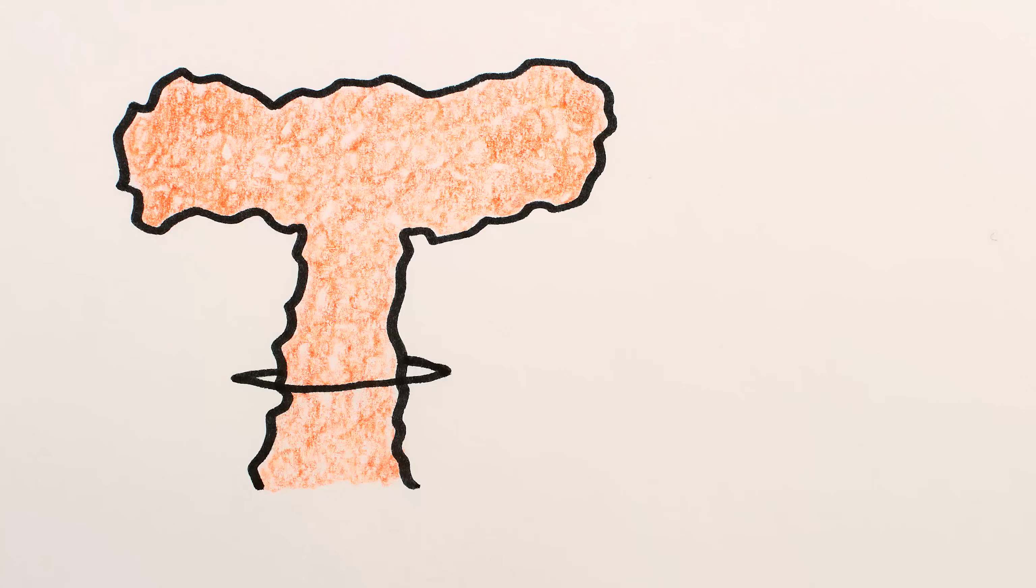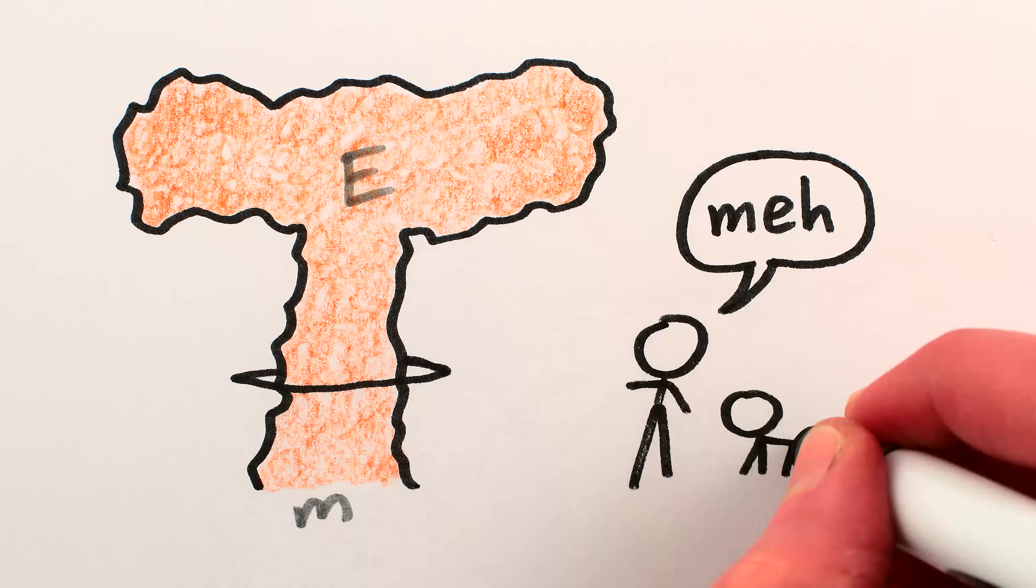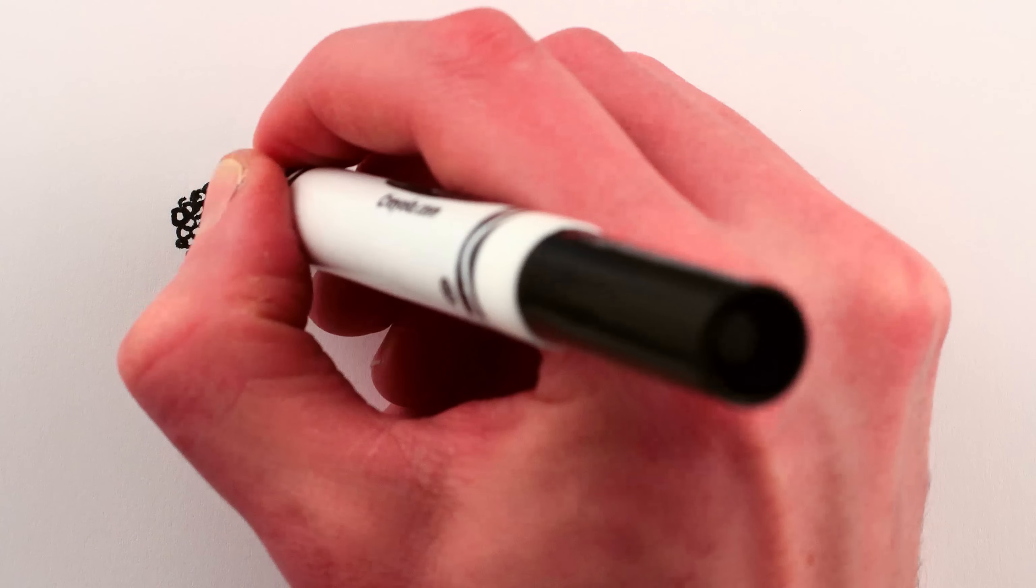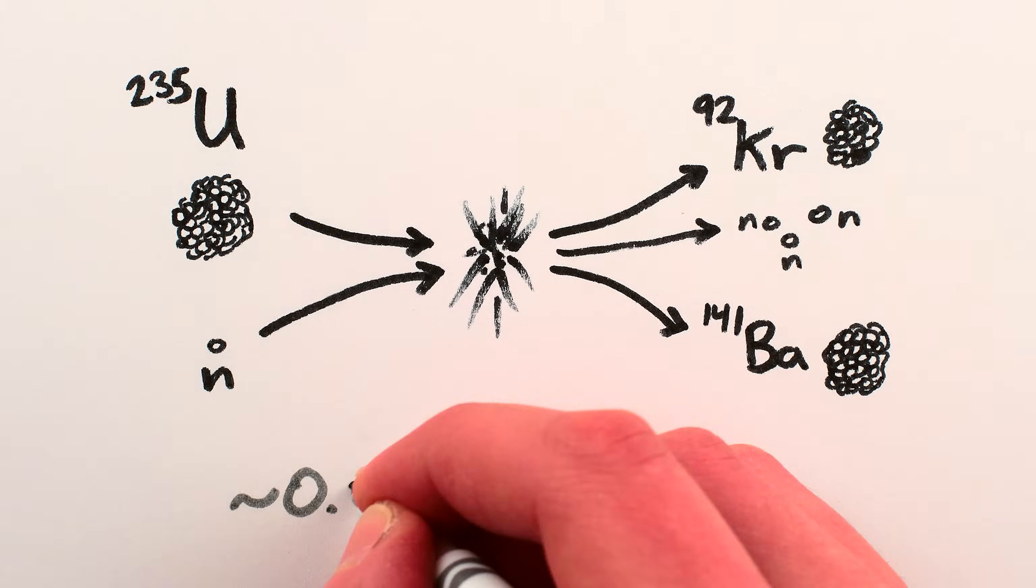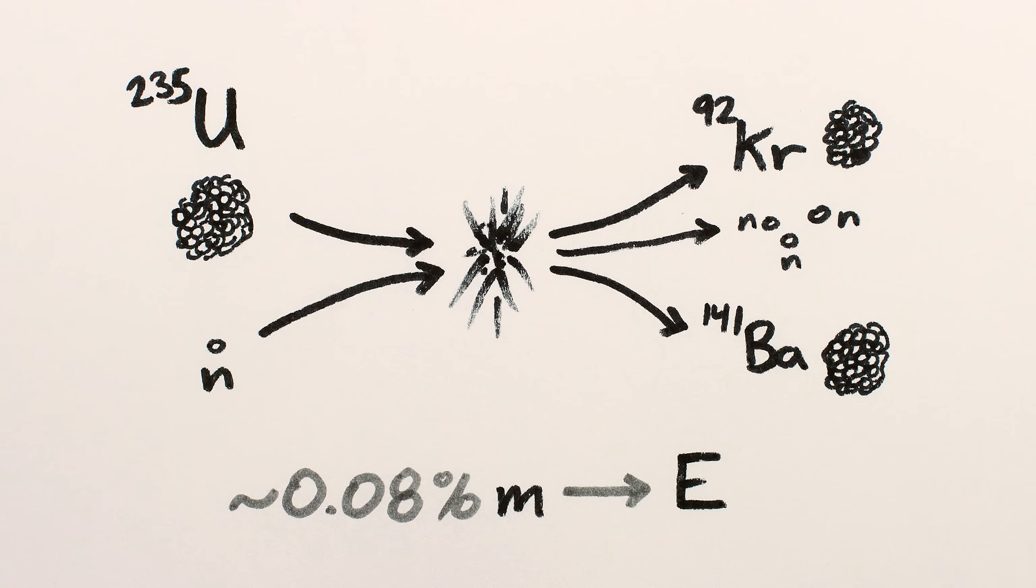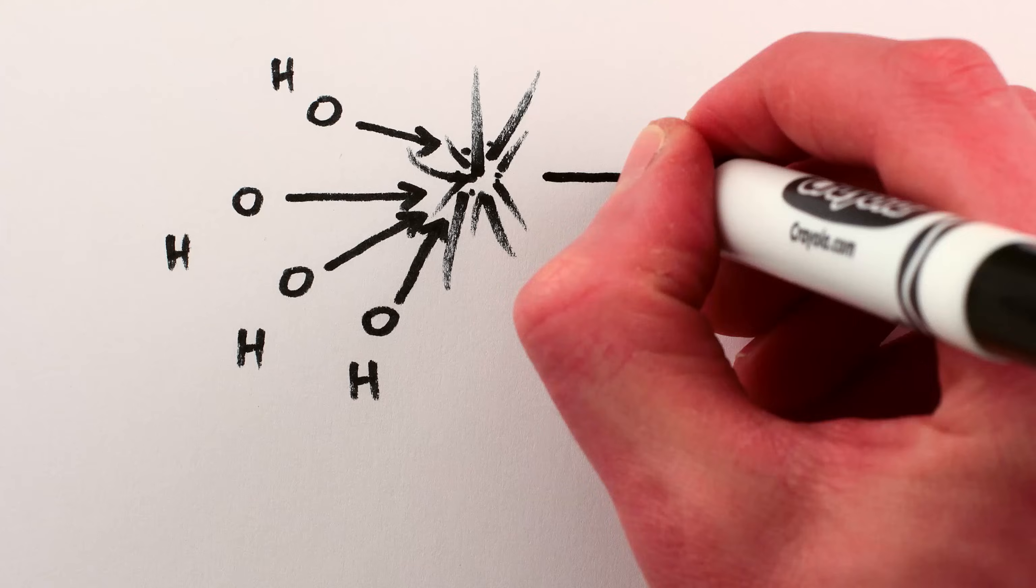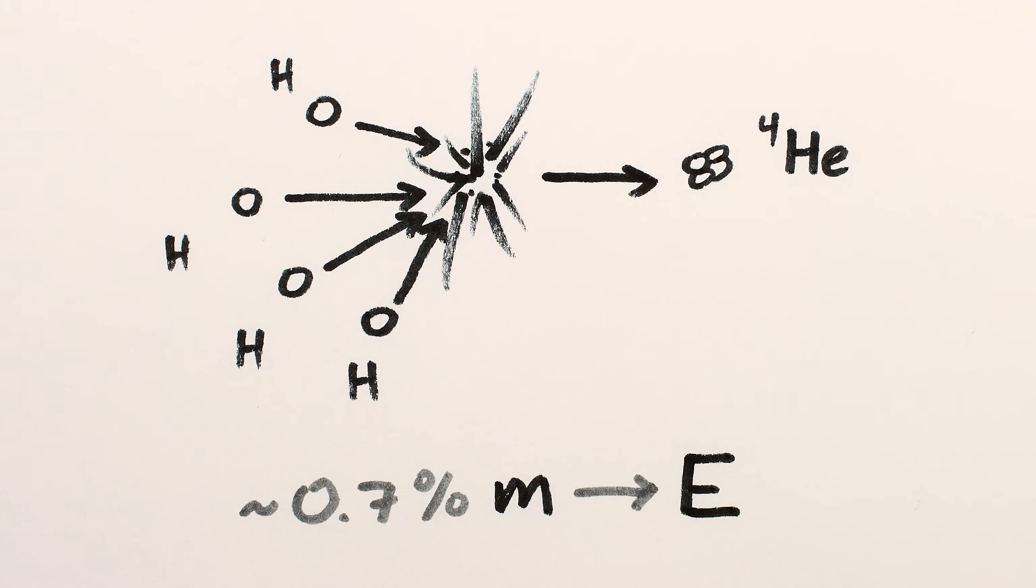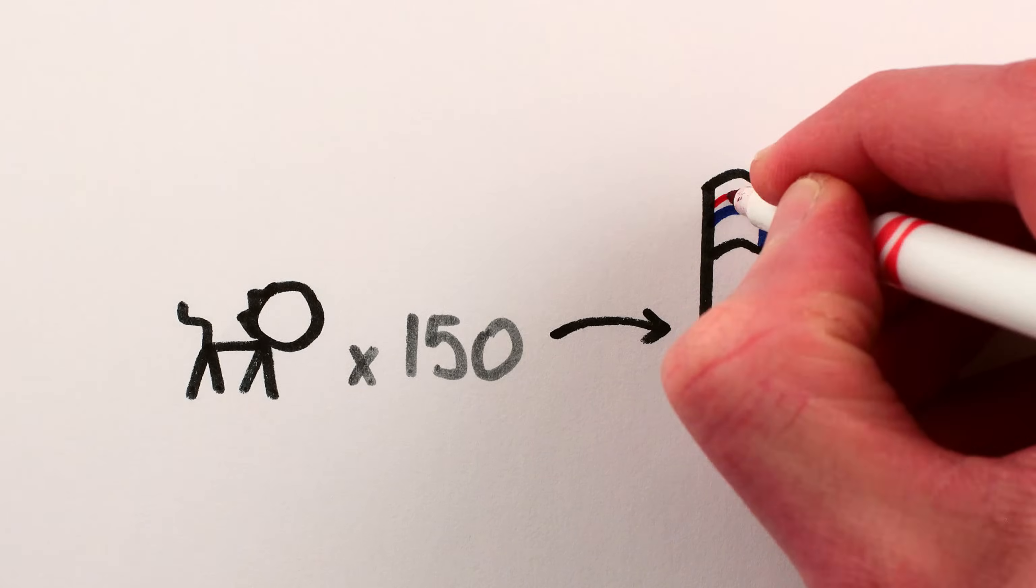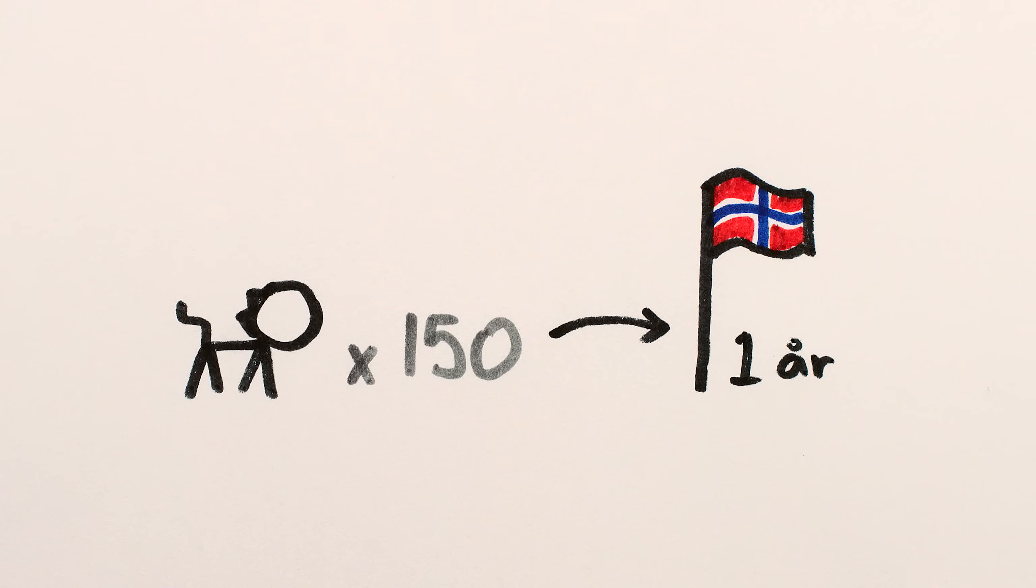Nuclear reactions are a lot more efficient, but still pretty mediocre on an absolute scale. Splitting uranium-235 into krypton and barium converts only about 0.08% of the uranium's mass into energy, and fusing hydrogen into helium, like in the sun, converts about 0.7% of the hydrogen's mass into energy. At that rate, you'd need 150 cats to power Norway for a year.